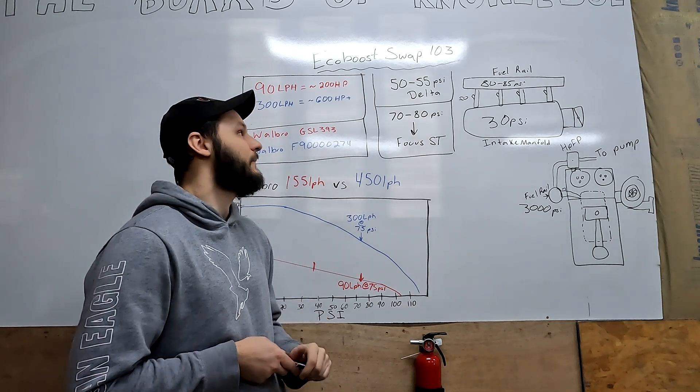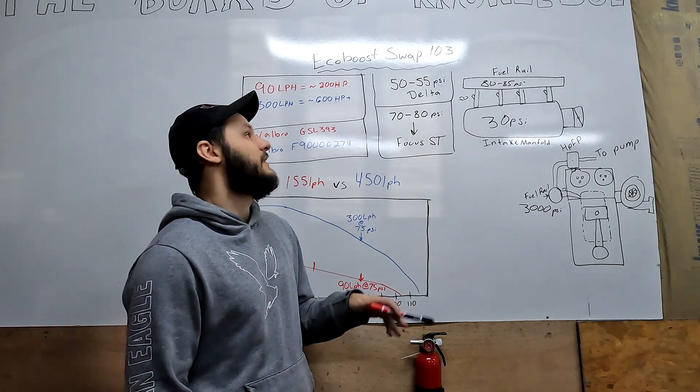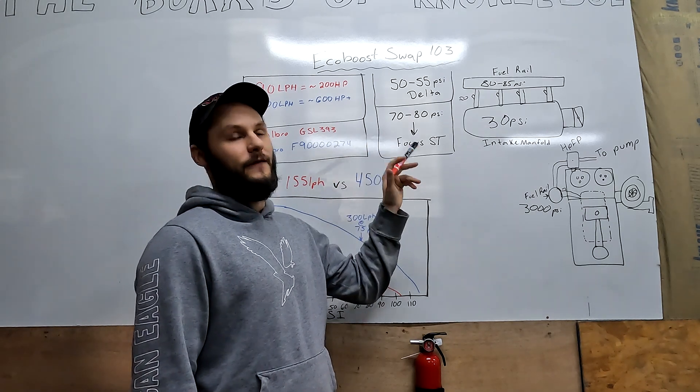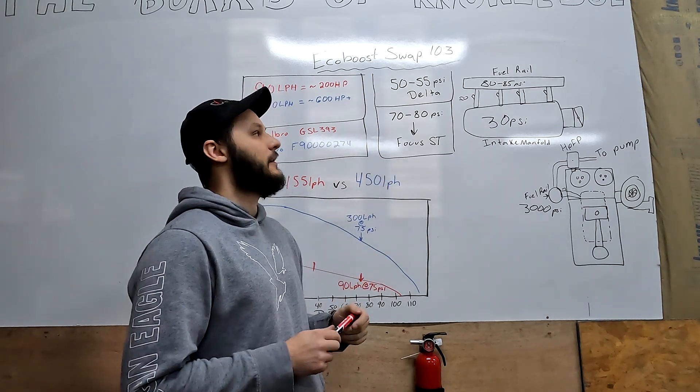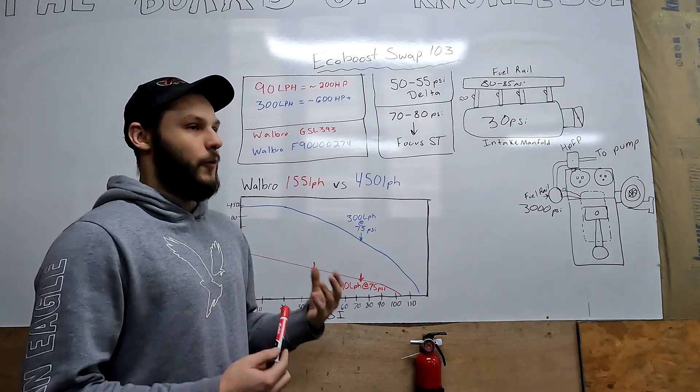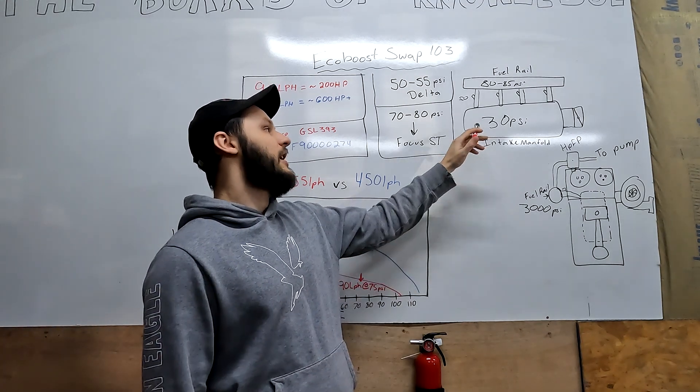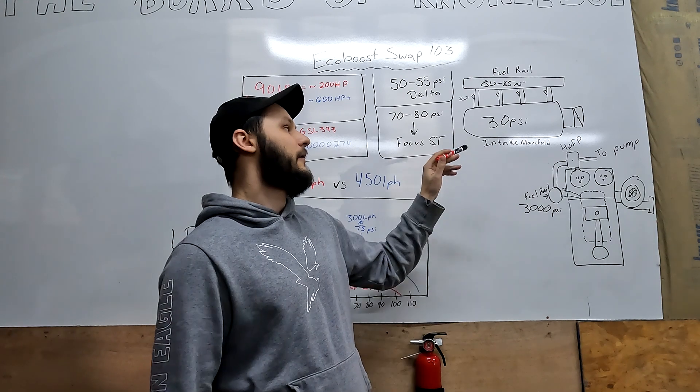What Ford says to do is run a 50 to 55 psi delta across the fuel injector. What does this mean in a normal engine where we're doing port injection?